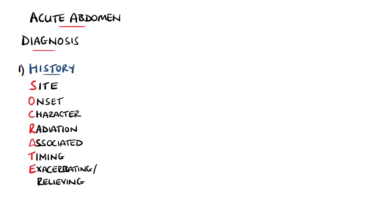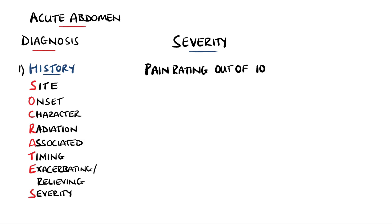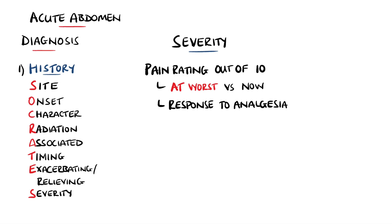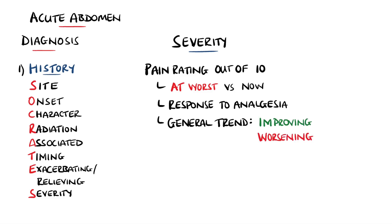The last S is for severity, and typically a pain score out of 10 is asked for. Remember to ask for the severity at its worst and at the time of the examination to gauge any fluctuations and to help guide the need for analgesia. It is also beneficial to ask whether the pain has been generally improving or worsening.